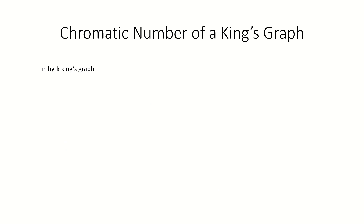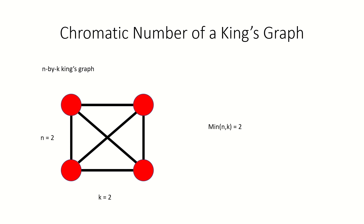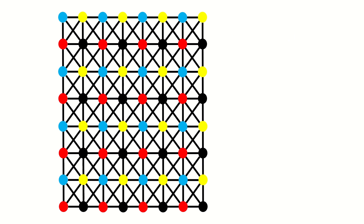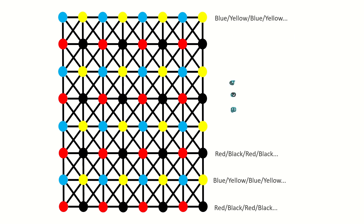Finally, what is the chromatic number of an n×k king's graph? It is 4, as long as the minimum of n and k is greater than 1. This is because there will always be a 4-clique — a set of 4 mutually adjacent vertices — in our graph, meaning the chromatic number is at least 4. We can color any such king's graph in exactly 4 colors: we switch color schemes every row, and within each row we alternate between two colors.